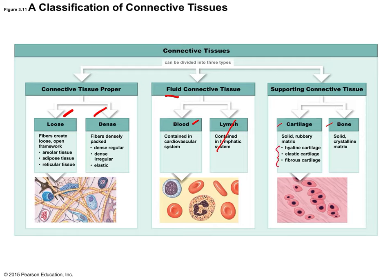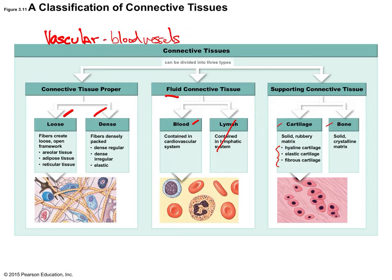There are three kinds of cartilage we'll go through. In general, connective tissue is the opposite of epithelial tissue: if epithelial tissue was avascular, connective tissue is vascular — there is a blood supply with blood vessels. However, there is an exception: cartilage is not vascular.